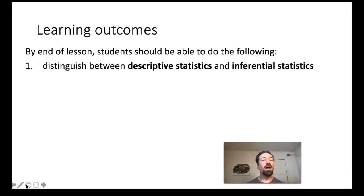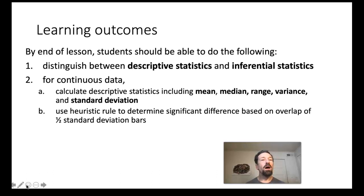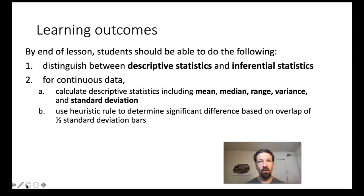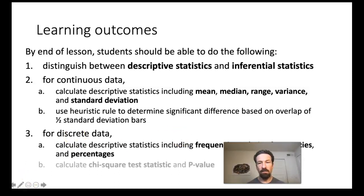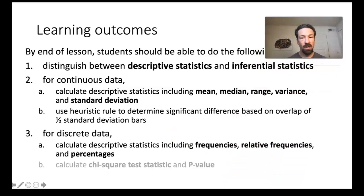To review: you should now be able to distinguish between descriptive and inferential statistics. For continuous data, you can calculate the mean, median, range, variance, and standard deviation, and use the heuristic rule with one-half standard deviation bars to assess significant differences between populations. For discrete data, you can calculate frequencies, relative frequencies, and percentages. Inferential statistics for discrete data—the chi-squared test and how to calculate p-values—will be introduced in a separate posting.